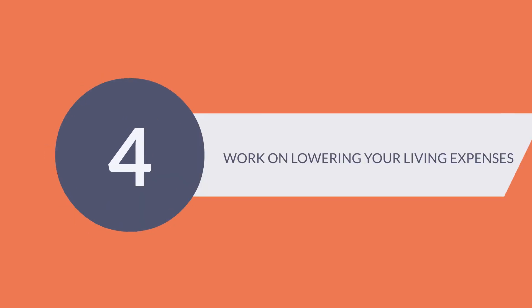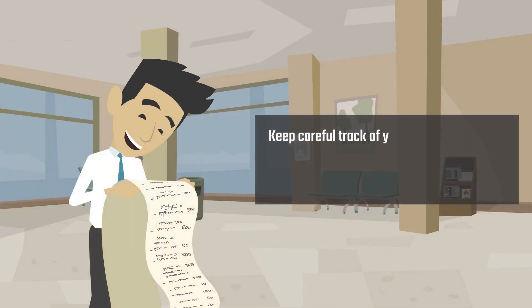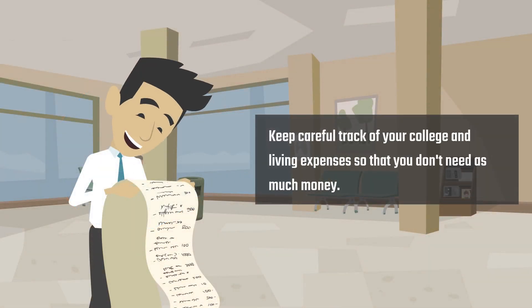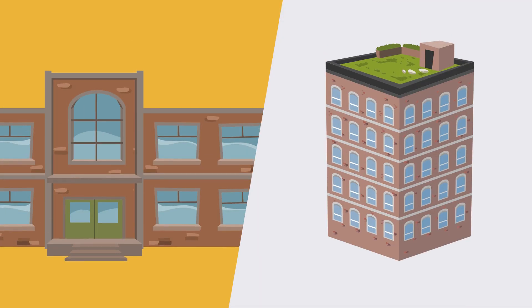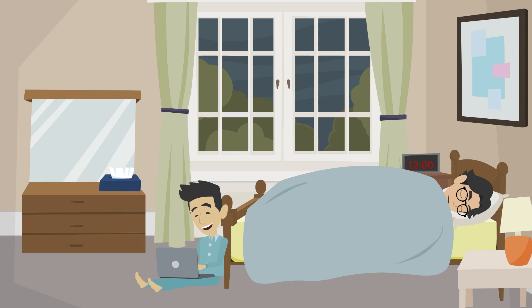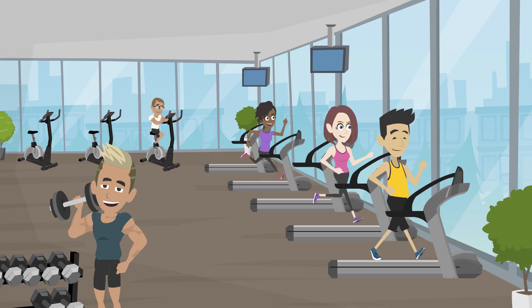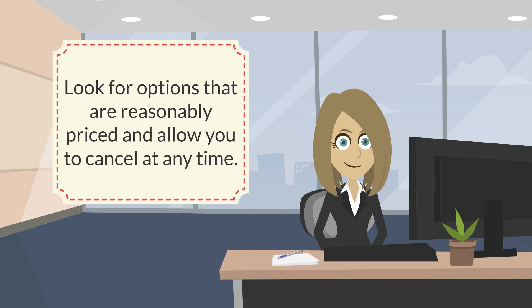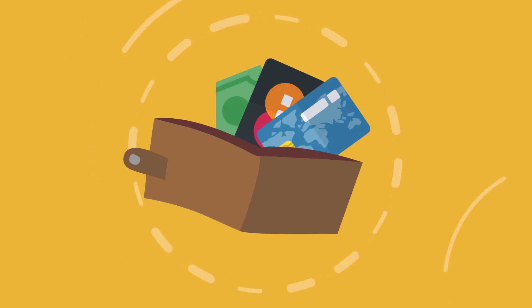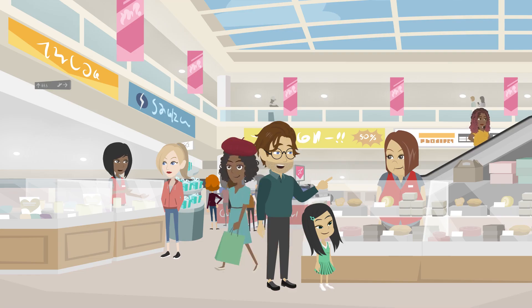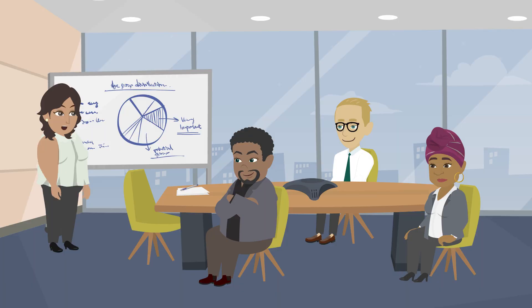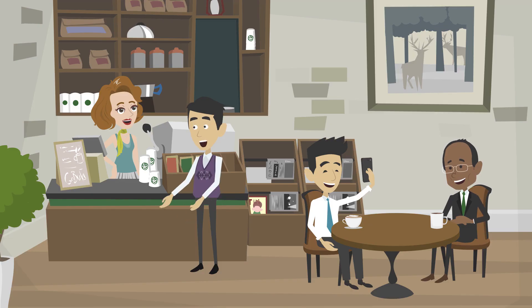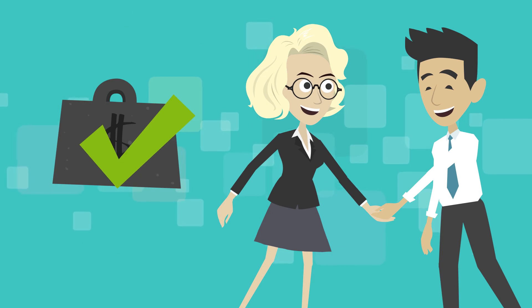4. Work on Lowering Your Living Expenses. Keep careful track of your college and living expenses so that you don't need as much money. You could investigate how much it would cost you to live off-campus rather than on-campus. To save money, find a roommate and share off-campus accommodation or live at home. Contracts such as gym memberships and cable subscriptions should be avoided. Look for options that are reasonably priced and allow you to cancel at any time. Additionally, keep your student ID in your wallet at all times. Take it with you whenever you go shopping or to a business that will cost you money, even the coffee shop down the street. Many business establishments provide student discounts.